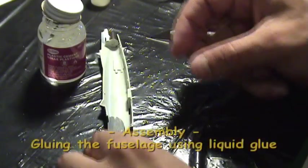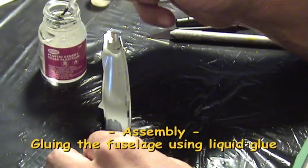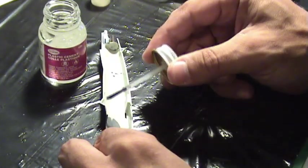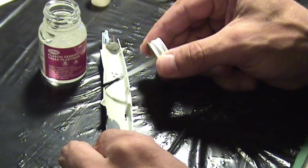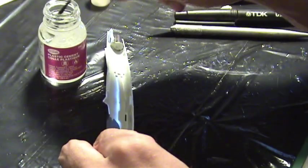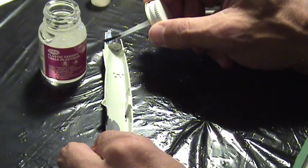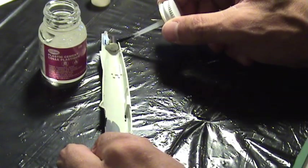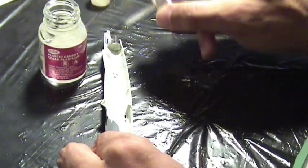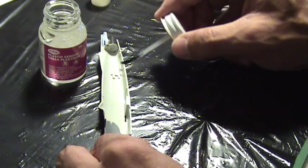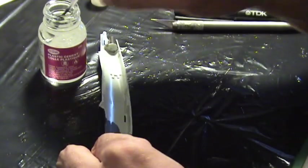To glue large parts like the fuselage halves, it is best to use liquid plastic cement. This type of glue dries faster. Apply the glue all around the edges of the fuselage.